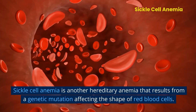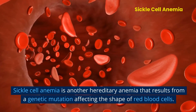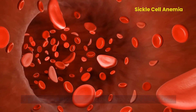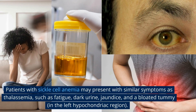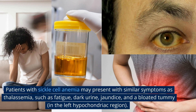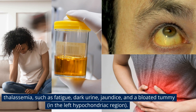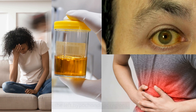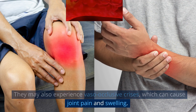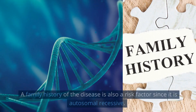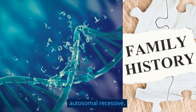Sickle cell anemia is another hereditary anemia that results from a genetic mutation affecting the shape of red blood cells. Patients may present with similar symptoms as thalassemia, such as fatigue, dark urine, jaundice, and a bloated tummy in the left hypochondriac region. They may also experience vaso-occlusive crises, which can cause joint pain and swelling. A family history of the disease is also a risk factor since it is autosomal recessive.